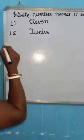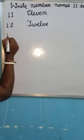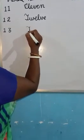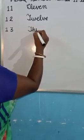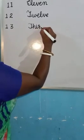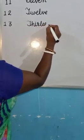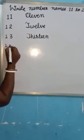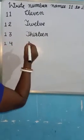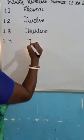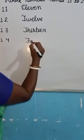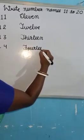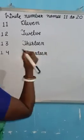And 1-3, 13. Spelling of 13 is T-H-I-R-T-E-E-N, 13. 1-4, 14, F-O-U-R-T-E-E-N, 14. Okay.